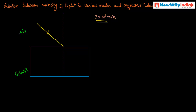When the light enters into the denser medium, it is slowed down. The light gets slowed down, and that means it bends — it is slowed down in this medium. So what is the velocity of light in glass? That is 2 into 10 power 8 meter per second. This is the velocity of light in the glass.